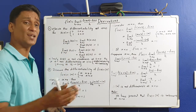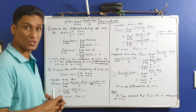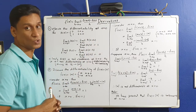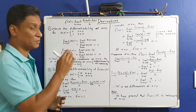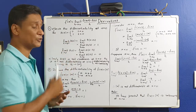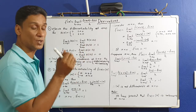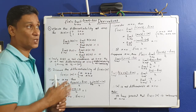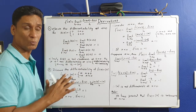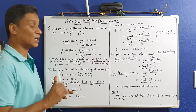This is the Heaviside function H(t): 0 for t < 0, and 1 for t ≥ 0. To check differentiability, we first check continuity by computing the left limit and right limit at t = 0. If you want to know how to write left limit or right limit, you can see the other video.